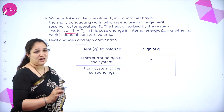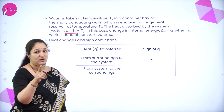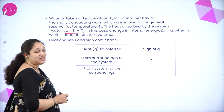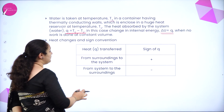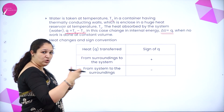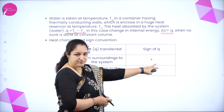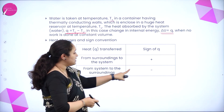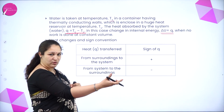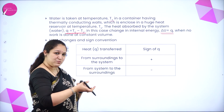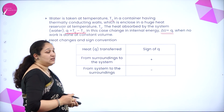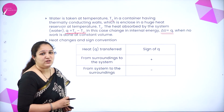For heat sign conventions: the heat is transferred from the surrounding to the system — when it comes from surrounding to system, it is positive. From the system to the surrounding, it is negative. So when heat is given from the system to the surrounding, it is negative; when the system is absorbing heat from the surrounding, it is positive.